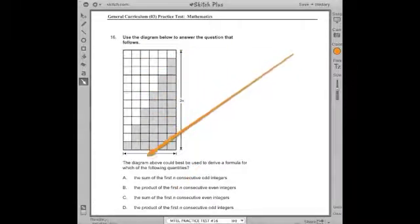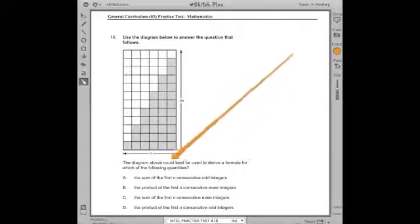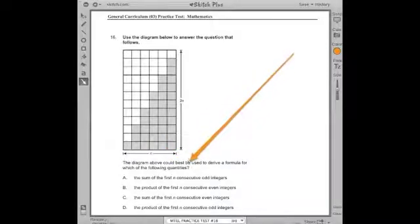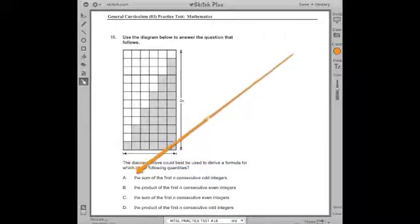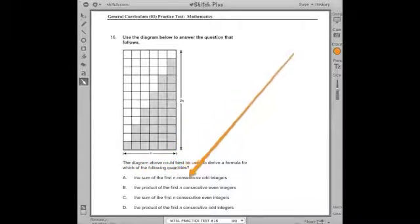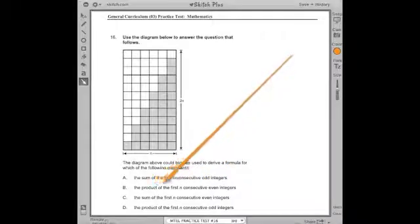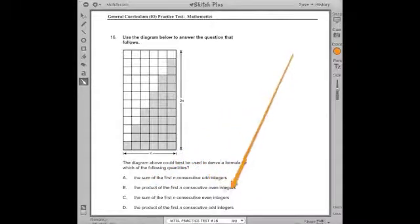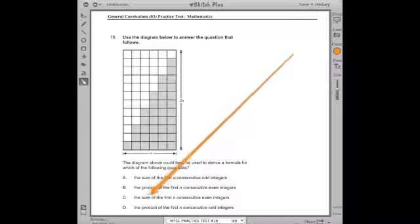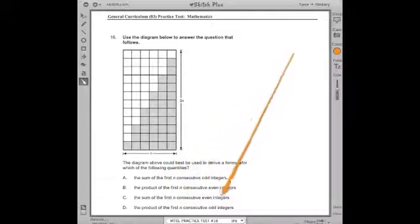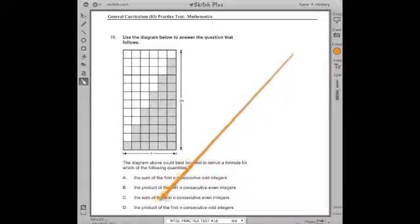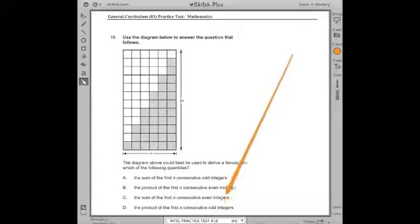The diagram above could best be used to derive a formula for which of the following quantities: A) the sum of the first n consecutive odd integers, B) the product of the first n consecutive odd integers, C) the sum of the first n consecutive even integers, D) the product of the first n consecutive odd integers. Wow, where should I even begin with a problem like this?